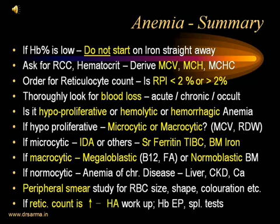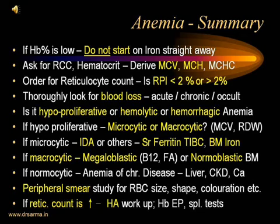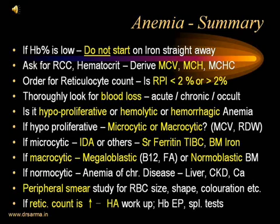To exclude hemorrhagic anemias, thoroughly look for blood loss — acute, chronic, or occult. Remember the occult blood benzidine test will be false positive in patients who have taken non-vegetarian food during the past 48 hours. Once we classify our patient into hypoproliferative, hemolytic, or hemorrhagic anemia: hypoproliferative anemia is our bread and butter to treat; hemorrhagic anemia requires attending to the underlying cause of hemorrhage; hemolytic anemia needs a higher workup by a hematologist. If hypoproliferative, find out if MCV is less than 80 (microcytic hypochromic) or more than 100 (macrocytic). Serum ferritin will be very low (less than 33 picomoles per liter), TIBC increased (more than 340), and bone marrow iron absent in IDA.